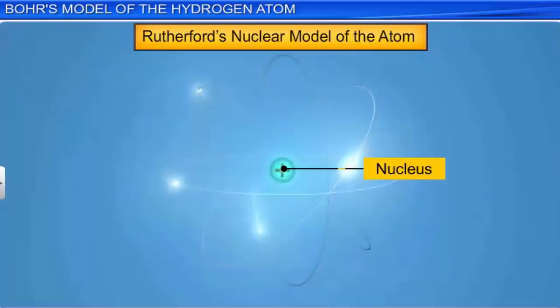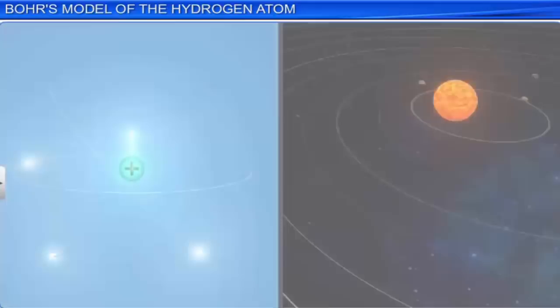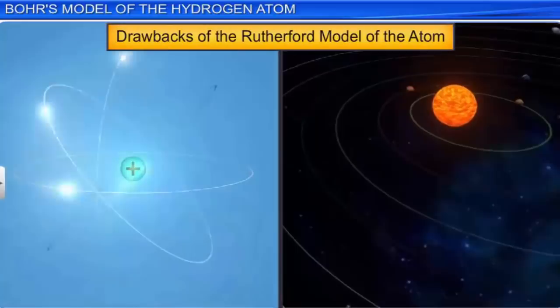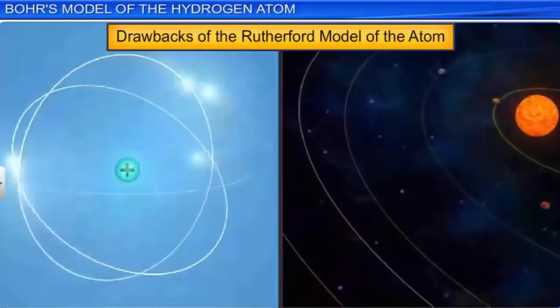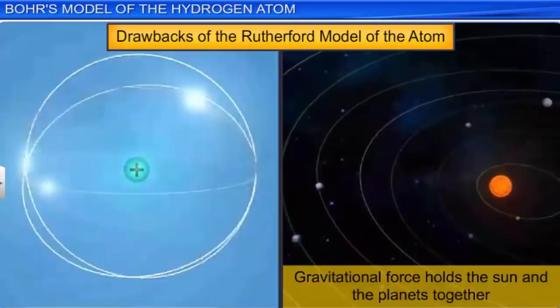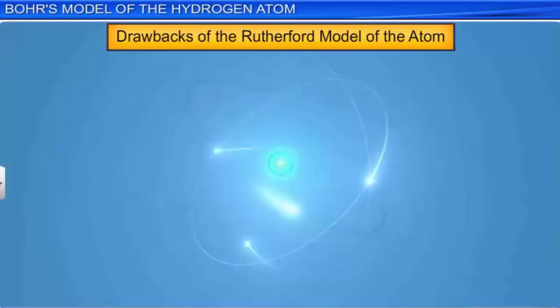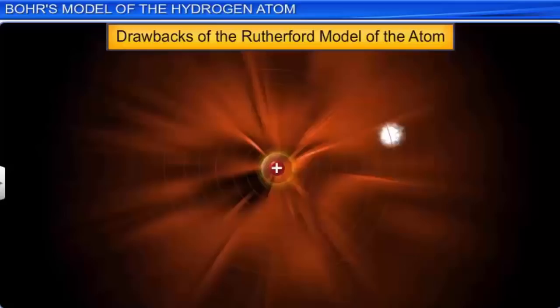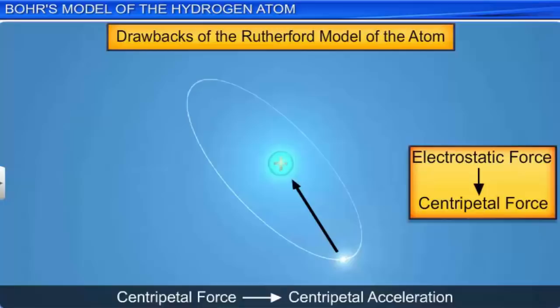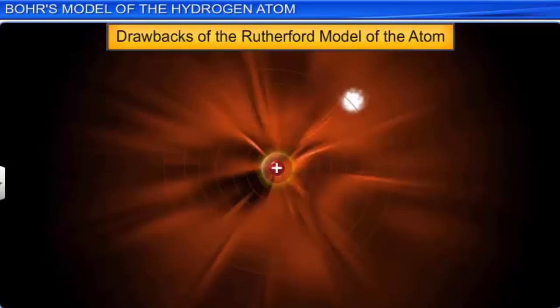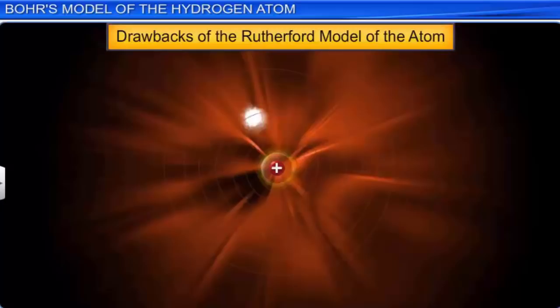The model assumes that the system of electrons revolving around the nucleus is similar to our planetary system. As gravitational force holds the planetary system together, the electrons around the nucleus are held by the electrostatic force given by Coulomb's law, which acts as the centripetal force on the electron. Because of this, the electron gains centripetal acceleration. According to classical electromagnetic theory, an accelerated electron should continuously lose energy as it emits electromagnetic waves. As a result, the electron would spiral inward and eventually fall into the nucleus, making the atom unstable.